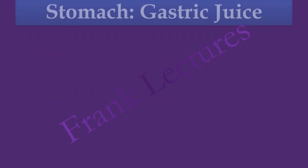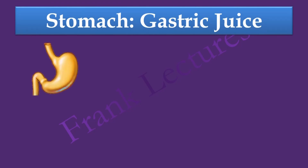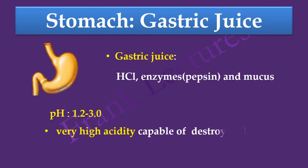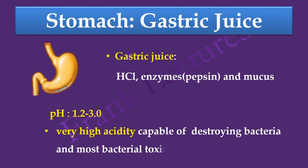The stomach contains gastric juice, which includes hydrochloric acid, enzymes such as pepsin, and mucus. The pH of the stomach is between 1.2 and 3. This very high acidity is capable of destroying bacteria and most bacterial toxins.